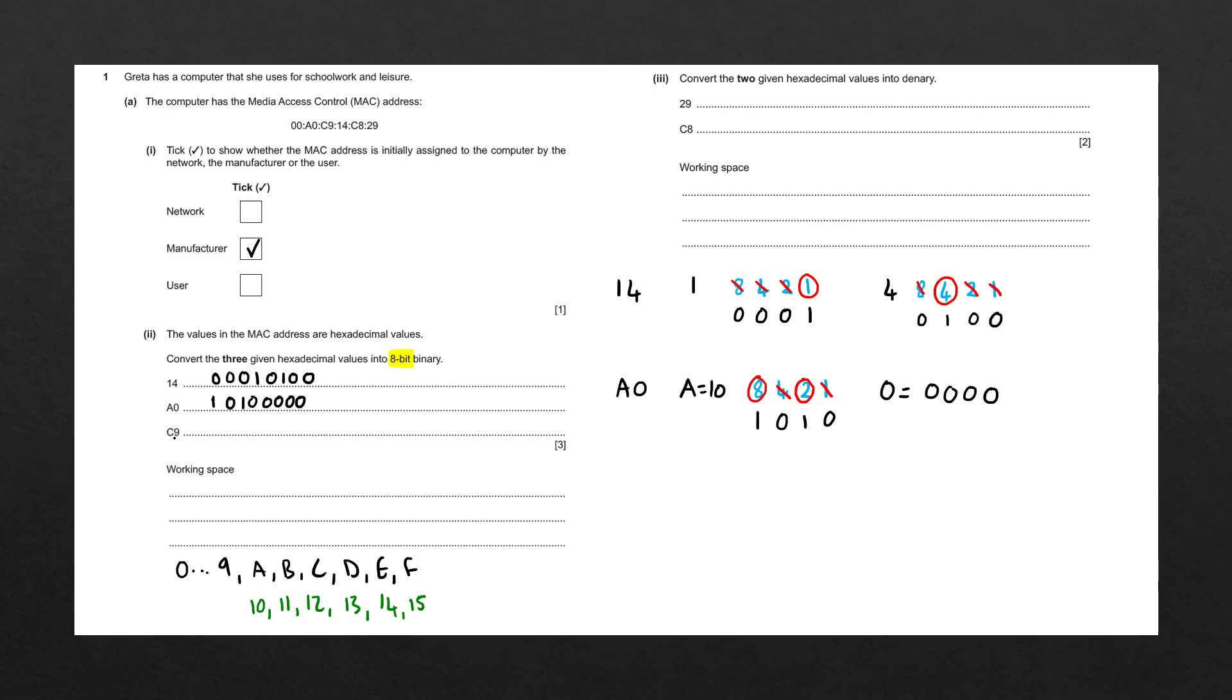Next one we have is C9. First number is C, which is equivalent in denary to 12. Writing down 1, 2, 4 and 8, which numbers do we need to make up 12? That's going to be 8 and 4. We can circle these two and cancel out the 2 and the 1. So we write down 1100. The next number we have is 9, which is already in denary, meaning we don't have to do any conversions. The numbers to make up 9 is 8 and 1, so we're left with 1001. The answer then is 1100 1001.